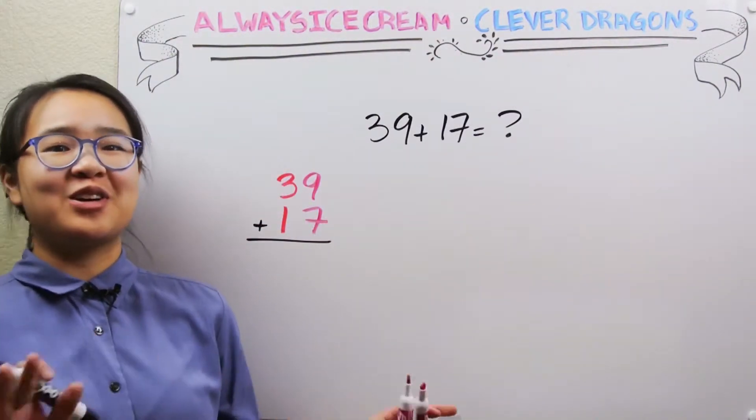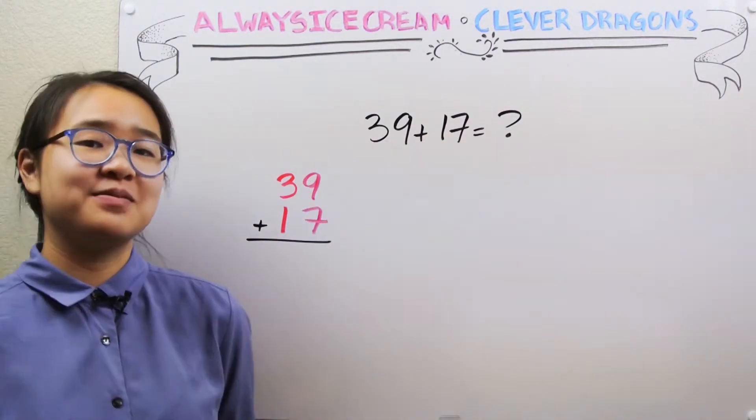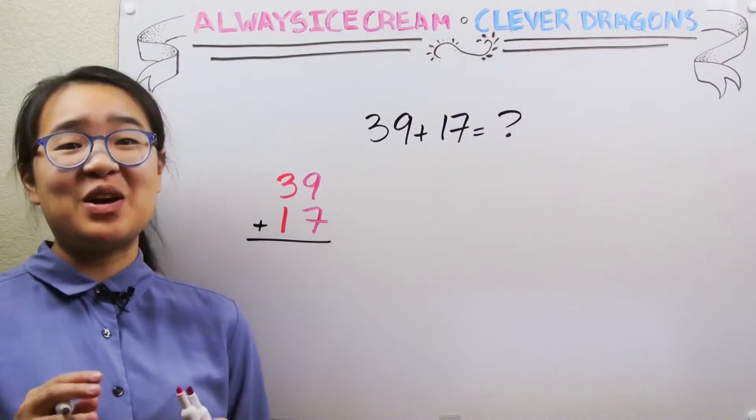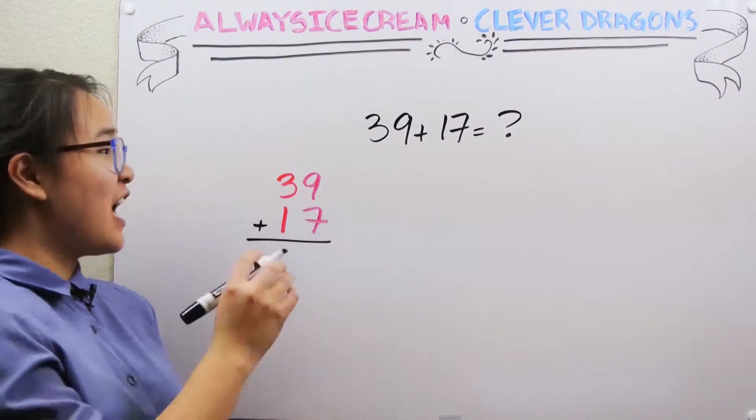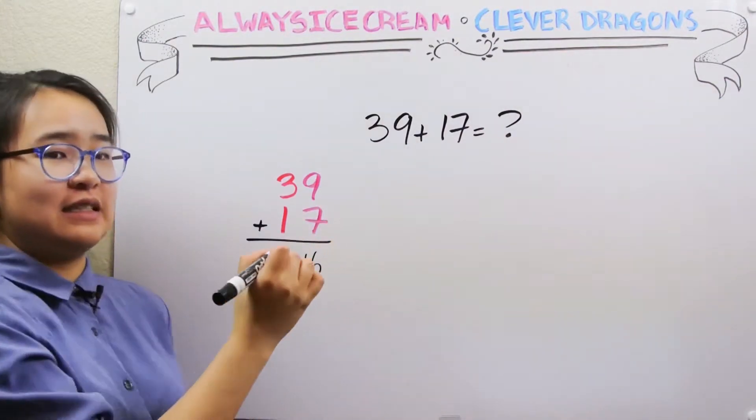Okay, so now let's throw a curveball in here. Let's try to add 39 and 17. Now at first glance, you might be like, okay, I've got this. I know my new adding tricks. I can just add the ones over here together, nine plus seven, and I get 16.